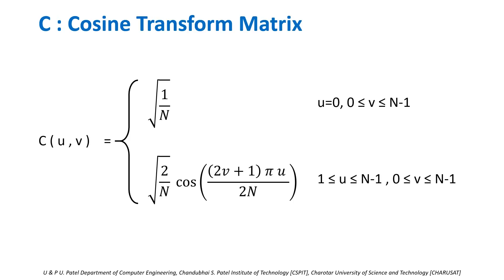C is cosine transform matrix. C(u,v) can be computed using either of two equations. First is √(1/N) for u=0 and v ranges from 0 to N-1. Second is √(2/N) cos((2v+1)πu/2N) for u ranges from 1 to N-1 and v ranges from 0 to N-1.